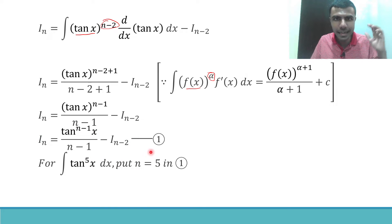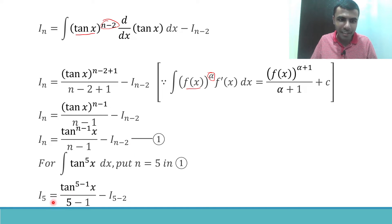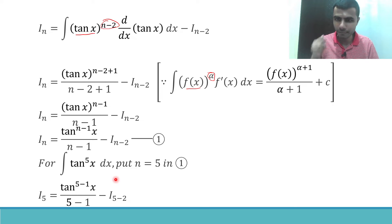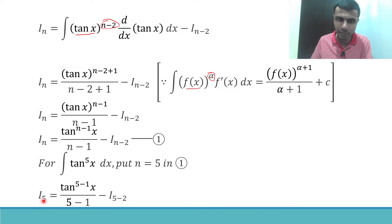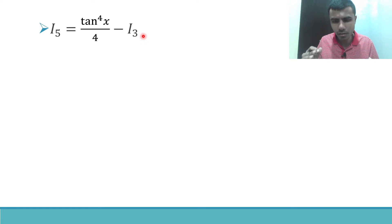Simplifying: I_5 = tan⁴x / 4 − I_3. Now a puzzle for you: I found I_5 by substituting n = 5. How do I get I_3? Simply put n = 3 in the same reduction formula.